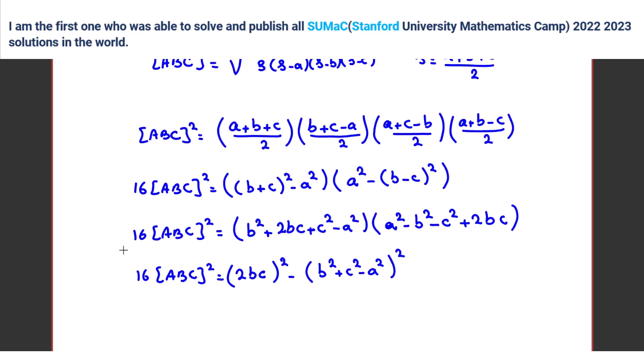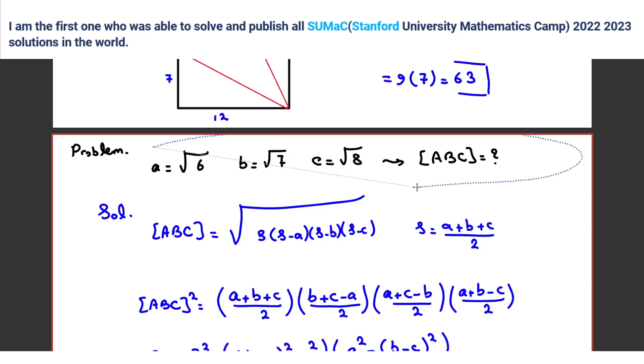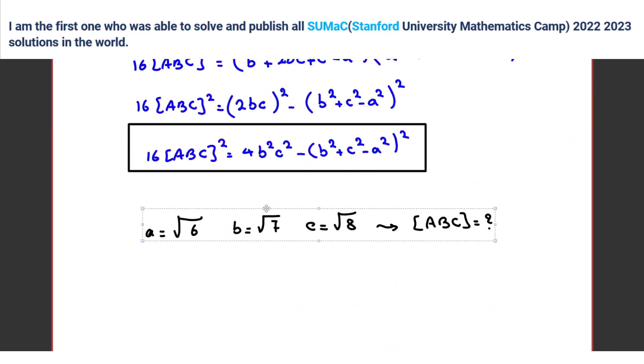So memorize this form. Okay? Because in this form, we can also write it as 16 area of ABC squared is equal to 4B squared C squared minus this. Now the approach is so much good for calculating area. Yeah. Because all of them are A squared, B squared, C squared. Now let me copy these down here. So calculate the area is what? Okay?